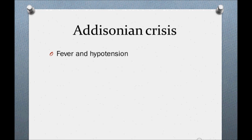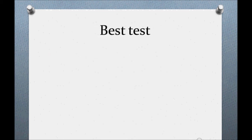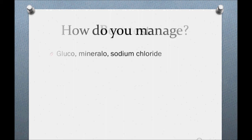In Addisonian crisis, the history is similar to adrenal insufficiency but with the addition of fever. The best test is the ACTH stimulation test: cortisol levels are measured before and after ACTH administration. A normal person shows a brisk rise in cortisol after ACTH stimulation. Management involves giving glucocorticoids, mineralocorticoids, and sodium chloride.